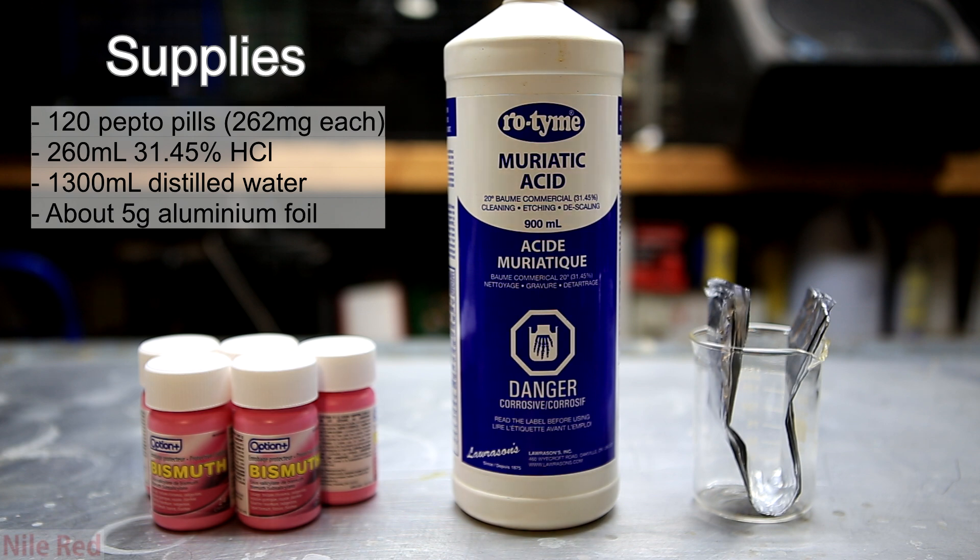I used 120 pills of Pepto-Bismol, about 260 milliliters of 31.45% hydrochloric acid, and about 5 grams of aluminum foil.